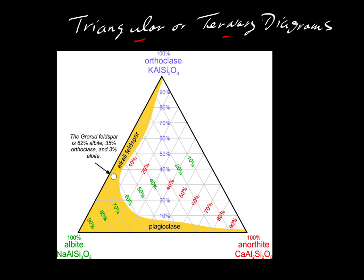The first issue with ternary diagrams is: why are they so common? The reason they are common, at least in the earth sciences and geology especially, is because so many rocks and minerals are made of dominantly two or three kinds of things.